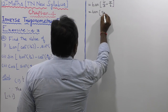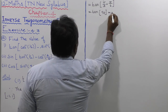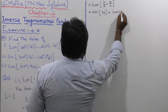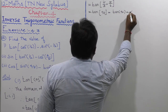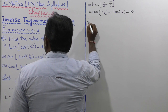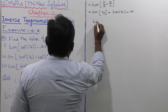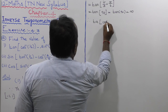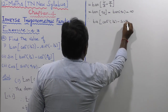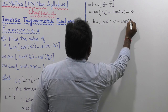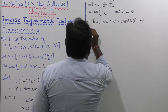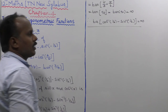So this equals tan of 60 degrees plus 30 degrees, which goes to 90 degrees. Therefore, tan of 90 degrees equals infinity. So the first substitution - tan of cos inverse of 1 by 2 minus sin inverse of minus 1 by 2 - equals infinity. The first substitution is completed.